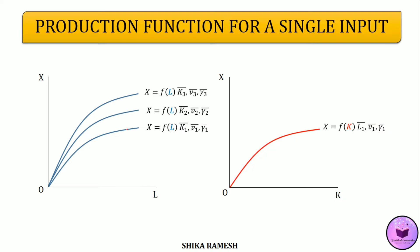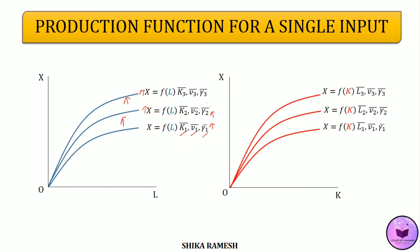In the first diagram, we explain the production function with respect to change in labour while capital and all other factors are held constant. If any of the factors which are held constant increases, the production function will shift upwards, implying that output has also increased. We shall now explain the production function for a single input with the help of a numerical example and represent the table in the form of a graph.